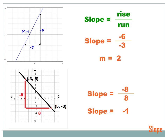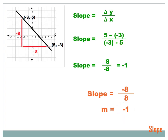Let's try another line. Starting at one point, the rise is one, two, three, four, five, six, seven, eight — it went down eight, so rise is negative eight. The run is one, two, three, four, five, six, seven, eight in a positive direction, so run is positive eight. Slope equals negative eight over positive eight, which is minus one. Notice that the first line had a positive slope and this second line has a negative slope. A line going up to the right gives a positive slope.